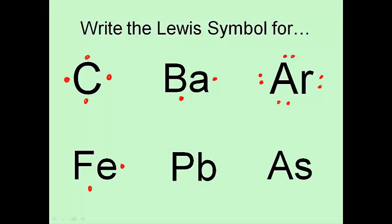So Pb. Pb is in the same column as carbon, so it's going to have the same Lewis symbol as carbon. One, two, three, four. And then arsenic. Arsenic is a little bit different. Arsenic is in the same as nitrogen and phosphorus. So arsenic has five, two in the four S, and three in the four P. So it's got one, two, three, four, five.